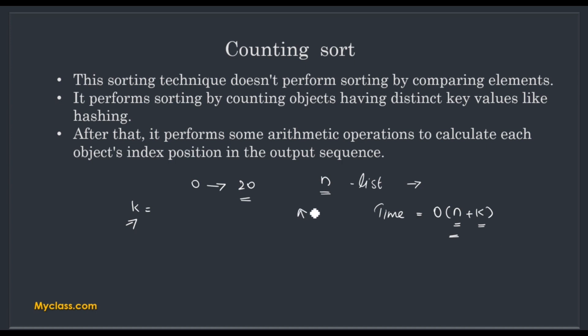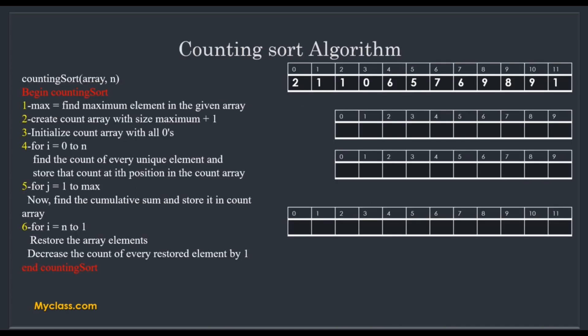We are also creating extra memory based on our n value, so the space complexity is O(n). Because of this extra memory allocation, counting sort is a not-in-place algorithm and also a stable sort. We will explain the stable sort property later.